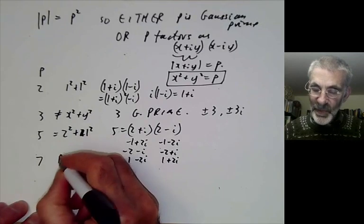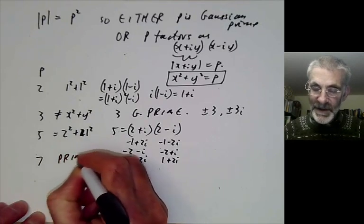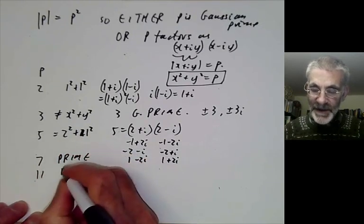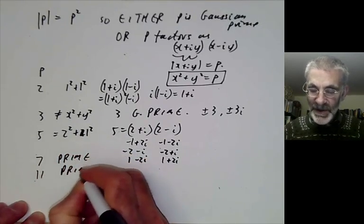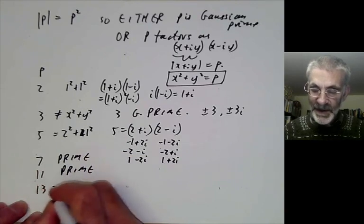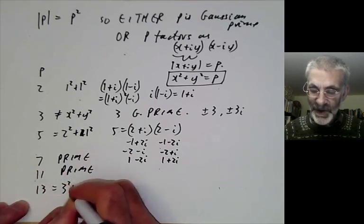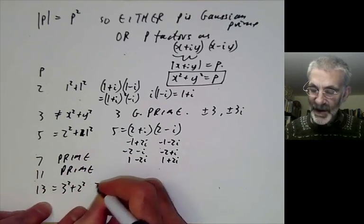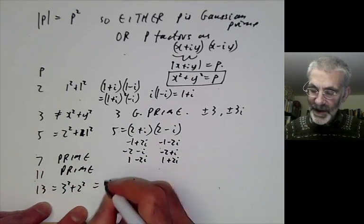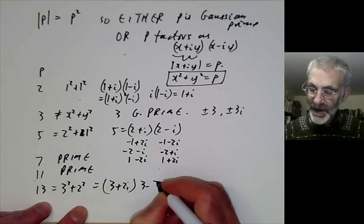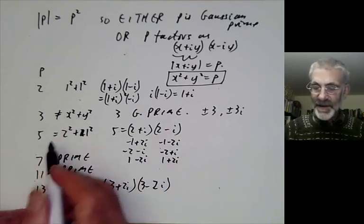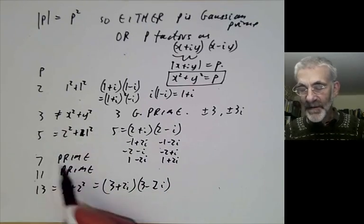7 is again a Gaussian prime because it's not the sum of two squares. 11 is again prime — not the sum of two squares — and 13 equals 3 squared plus 2 squared, so 13 equals (3 plus 2i)(3 minus 2i), similar to the case of 5.